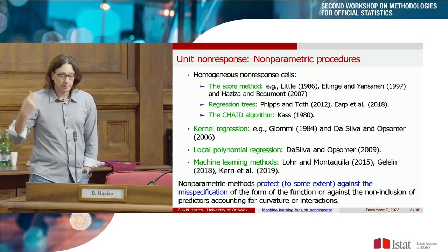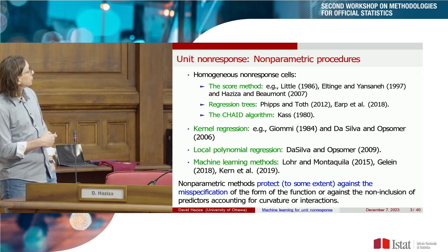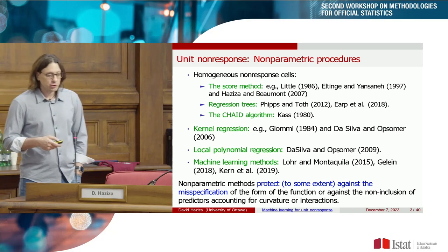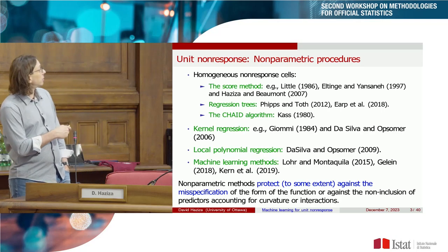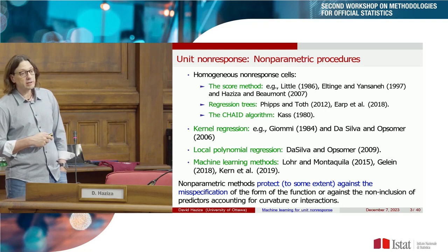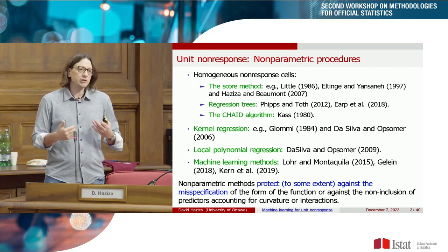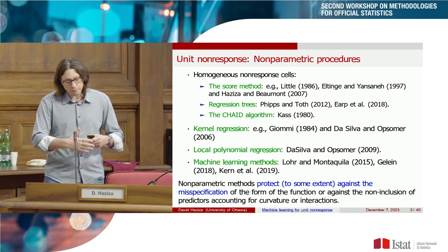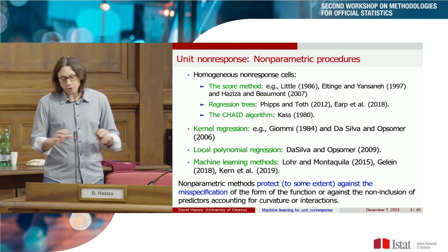The use of non-parametric procedures for unit non-response has been around for a very long time. At Statistics Canada we have the score method, regression trees, and the CHAID algorithm used 25 years ago — those are weighting cells. Traditional non-parametric procedures include kernel regression, local polynomial regression, and spline regression — kernel regression in surveys going back to Dorfman 1984. The issue with classical non-parametric methods is they suffer from the curse of dimensionality, whereas machine learning methods are fairly robust to it.